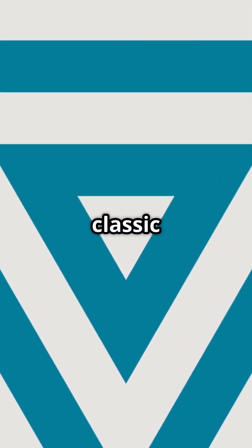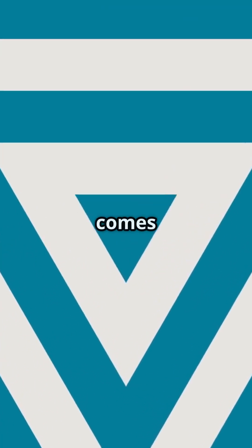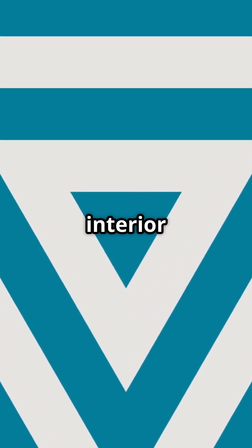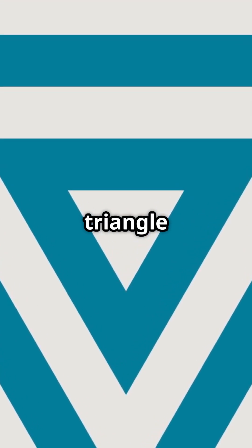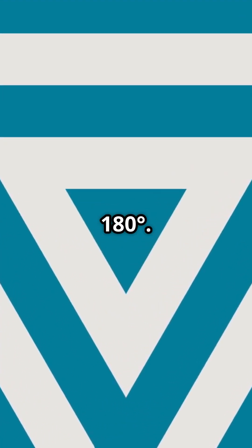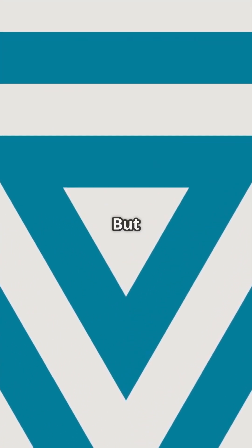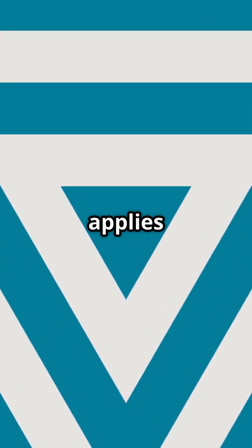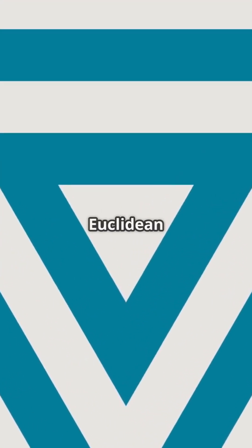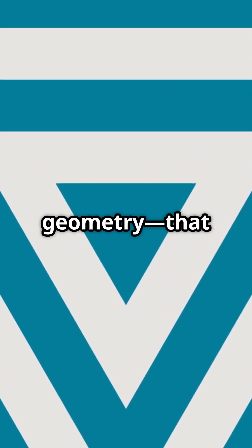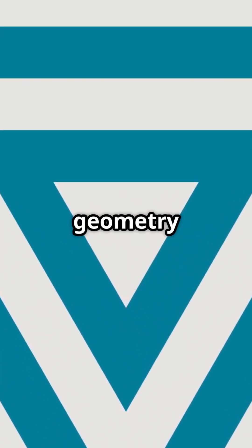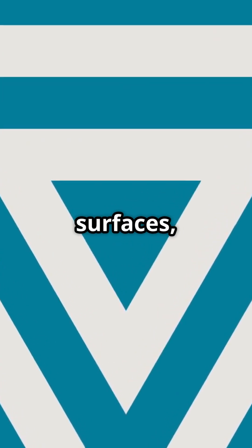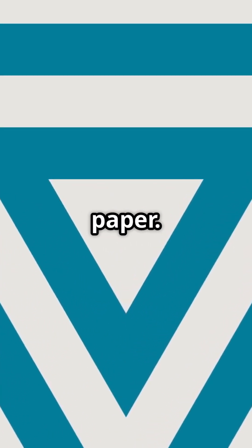When we think of triangles, the classic rule of geometry comes to mind: the sum of the interior angles of a triangle is always 180 degrees. But this rule only applies in what we call Euclidean geometry — that is, geometry on flat surfaces like a sheet of paper.